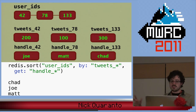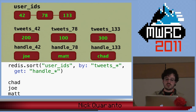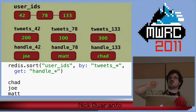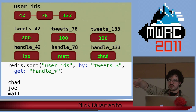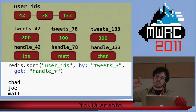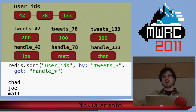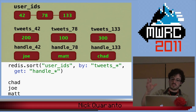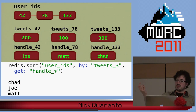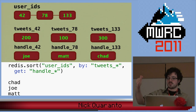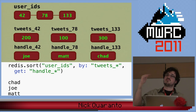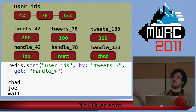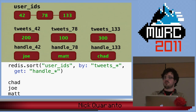It also gets even crazier because you can toss in a get option. Instead of just returning the original user ID list, you can also retrieve an entirely different key altogether — just like it does with the by option, it's going to replace that wildcard with the values. So since user ID 42 has 300 tweets, he's first in the list and Chad is the first result to get back since I'm doing a get with handle star. And so on for Joe and Matt.